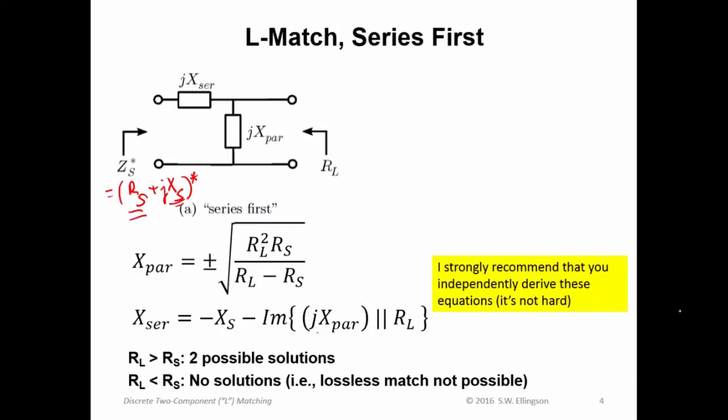Some notes about the solution. First, note that if R sub L is greater than R sub S, we have two possible solutions. However, if R sub L is less than R sub S, we have a problem with the denominator here. The denominator becomes negative, and the square root of a negative number is imaginary, so this becomes baloney in this case. When R sub L is less than R sub S, we have no solutions. What that means is a lossless match is not possible. So you should check for that. When R sub L is less than R sub S, there are no solutions for the series first match.